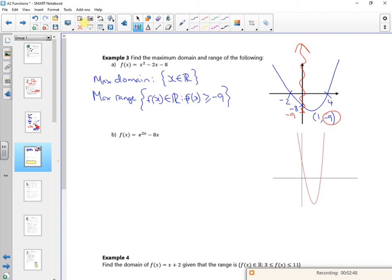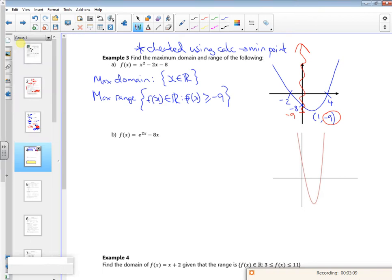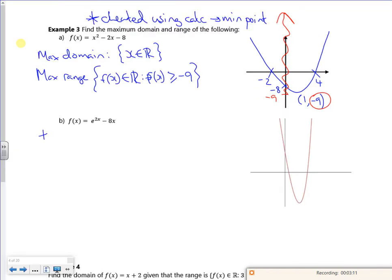Right, so I've cheated here with this one because I've used my calculator for the minimum point and for sketching it to be honest. Right, so it says on this one, f of x is e to the 2x minus 8x. So at the maximum, I need the minimum point here. I need the vertex. Right, so let's graph it. Let's cheat and graph it.